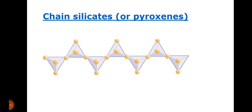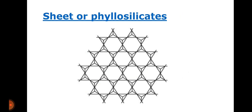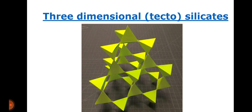Chain silicates may be single chain or double chain — double chain silicates are also called amphiboles. Next is sheet or phyllosilicate, which has a sheet-like structure formed by sharing oxygen. The last category is three-dimensional or tectosilicate, the most stable type, in which silicate tetrahedra are arranged in a three-dimensional form.